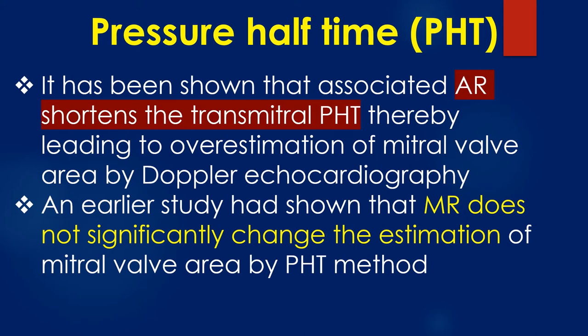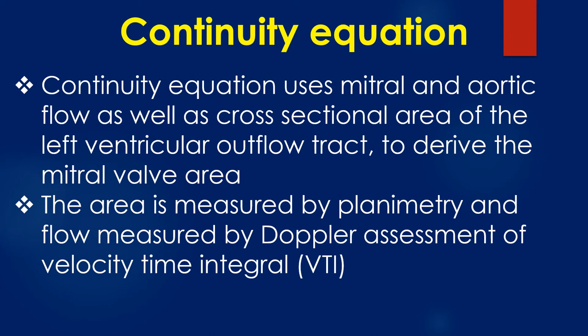Associated aortic regurgitation shortens the transmitral pressure half-time, thereby leading to overestimation of mitral valve area by Doppler echocardiography. An earlier study showed that mitral regurgitation does not significantly change the estimation of mitral valve area by the pressure half-time method. The continuity equation uses mitral and aortic flow as well as the cross-sectional area of the left ventricular outflow tract to derive the mitral valve area. The area is measured by planimetry and flow is measured by Doppler assessment of velocity time integral.